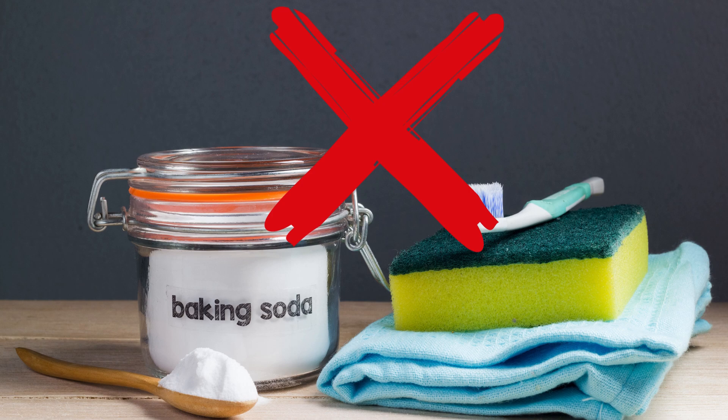Baking soda treatment for early and late blight and powdery mildew is a popular home remedy that works by creating an alkaline environment on the leaf. I love baking soda for cleaning, but I'm not a fan of using it on plants. Baking soda is sodium bicarbonate — it is basically a salt. The salt inhibits regular water flow and dehydrates plants, as well as building up to a toxic level and can burn your plants.